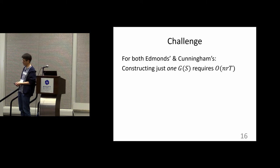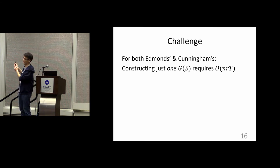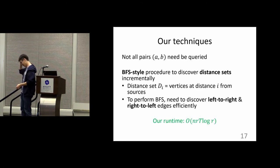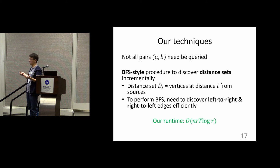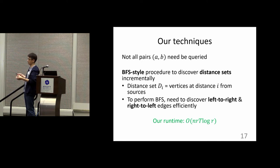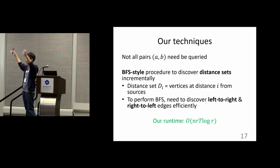We run into a barrier: for both Edmonds' and Cunningham's results, N·R time is needed just to compute the exchange graph, yet our target is N·R total time. The key observation is that what we actually need is the path, not the entire graph. It may be possible to compute such a path without exploring the entire graph, and we do that using a BFS approach. In BFS we incrementally compute distance sets D_i, which are just the vertices at distance i.